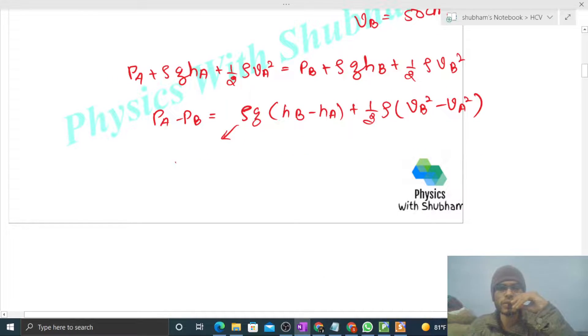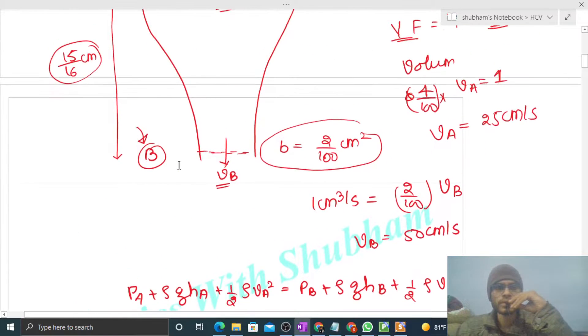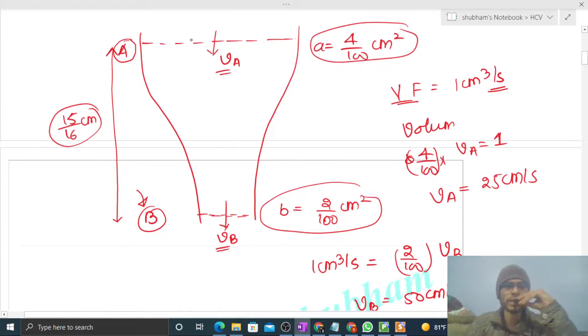Density of water will be 1000 kilogram per meter cubed, g will be 10. For hB minus hA, look, this is your hA and this is your hB, and hB is below hA, right? So that's why hB minus hA will be negative.